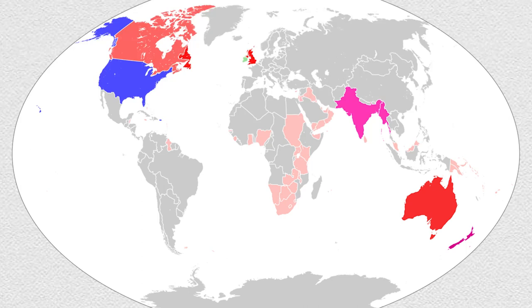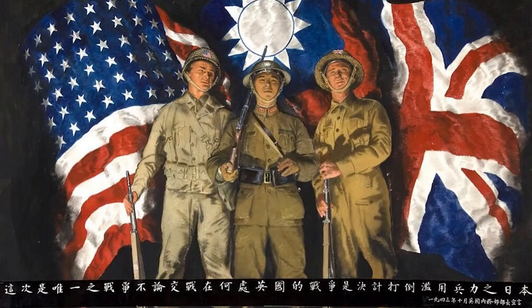War Plan Red was one of the color-coded war plans created by the United States Department of War during the interwar period of 1919 through 1939, to estimate the requirements for a hypothetical war with the British Empire. Many different war plans were routinely prepared by mid-level officers, primarily as training exercises in how to calculate the logistical and manpower requirements of fighting a war. War Plan Red outlined the steps necessary for the United States to fight and defeat the British Empire. Obviously, this plan was never carried out, seeing as the United States and Great Britain fought side by side in World War 2 and continue to be allies today.